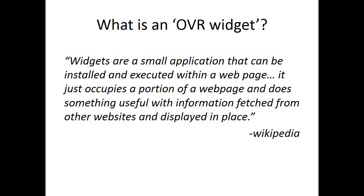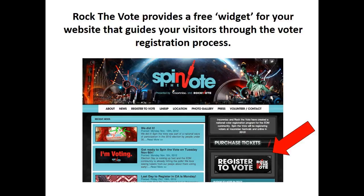The tool I'm going to talk about is called a widget — we call it the OVR Widget, Online Voter Registration Widget. According to Wikipedia, widgets are small applications installed on a website — a little button on your website that can fetch useful information and display it in place. This widget is free and available for anyone to use. You can embed it right onto your website and it will guide your visitors through the voter registration process, allowing any community organization, university, anyone with a blog or website, to provide voter registration to your members, clients, or website visitors year-round.